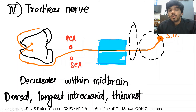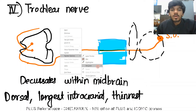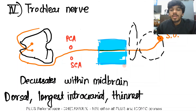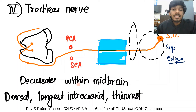Now we're going to cover the trochlear nerve. The trochlear nerve carries fibers going to the superior oblique muscle — that is the first key point.